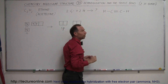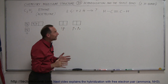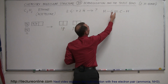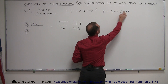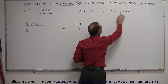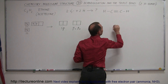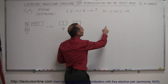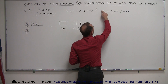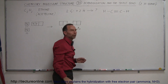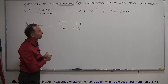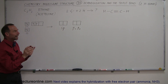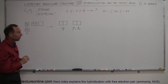The octet rule is followed: we have eight electrons partially possessed by the left carbon and eight electrons partially possessed by the right carbon. There's a sharing mechanism taking place, and some of the time hydrogen will have two electrons. So that is a stable molecule, but that's not exactly the true picture of what's going on.